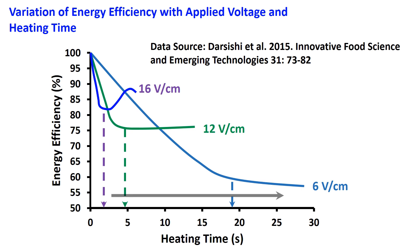In addition, energy efficiency decreases exponentially with the decrease of moisture content. Higher voltage shifts the curve up with the increase of applied voltage.